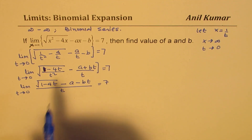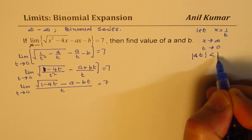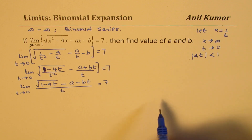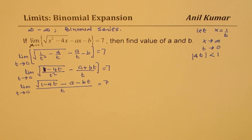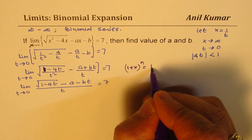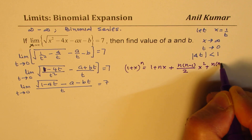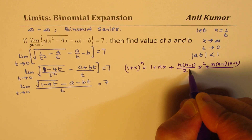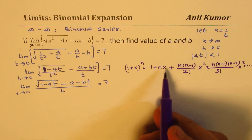Since t is approaching 0, 4t is less than 1, approaching 0 from the positive side. So we can use the binomial series. The binomial expansion we'll apply is: (1 + x)^n = 1 + nx + n(n-1)/2! * x^2 + n(n-1)(n-2)/3! * x^3 and so on. Here, instead of x we have -4t, and n is 1/2.